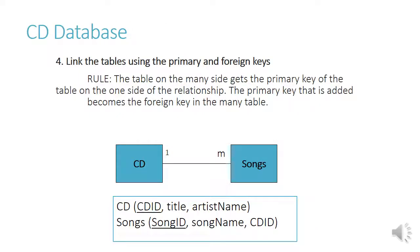We now link the tables using primary and foreign keys. The table on the many side gets the primary key of the table on the one side — that's the rule. The primary key that is added becomes the foreign key in the many table. So we take CD ID, which is the primary key on the one side, and we add it into the songs table, which is the many side. This example is now complete.